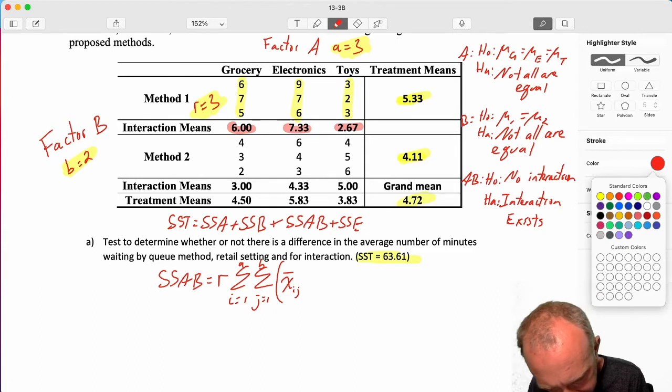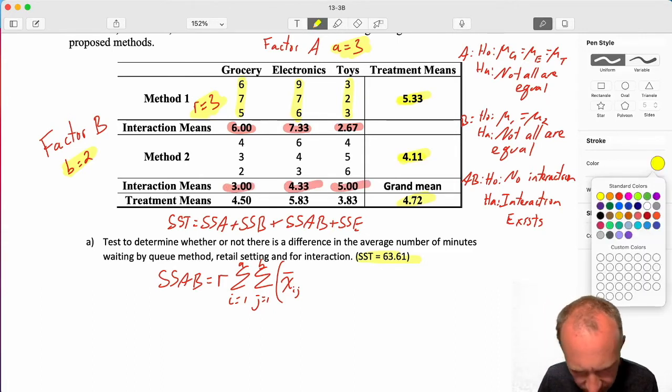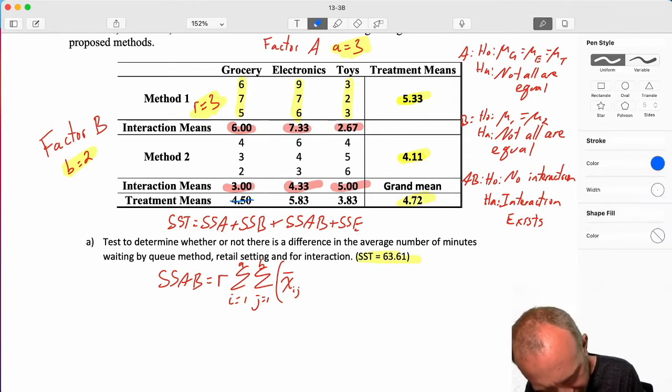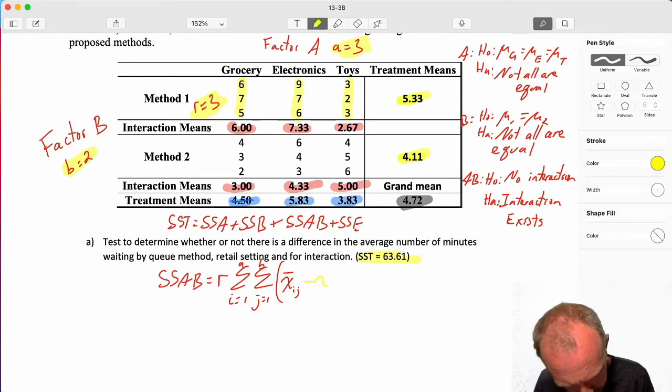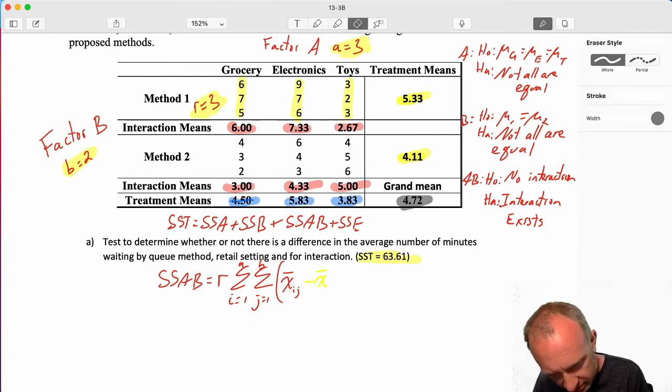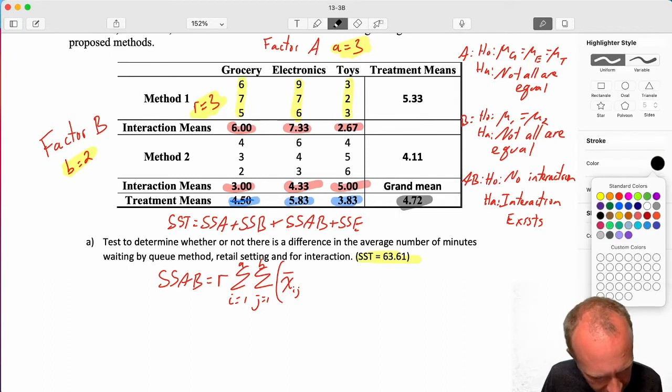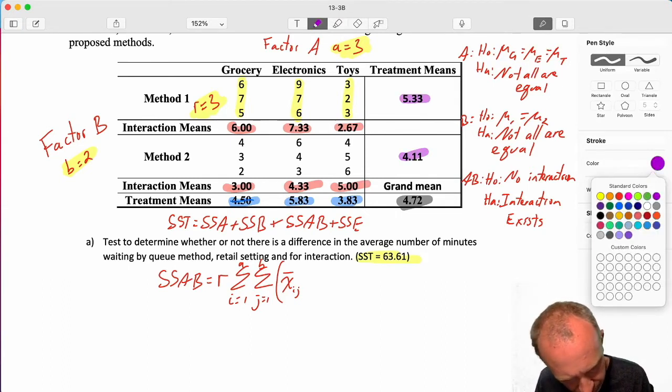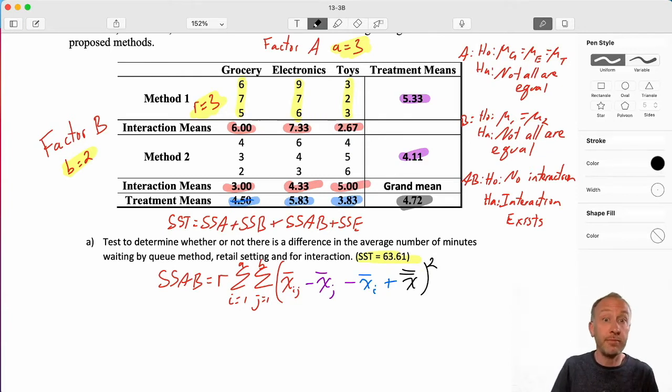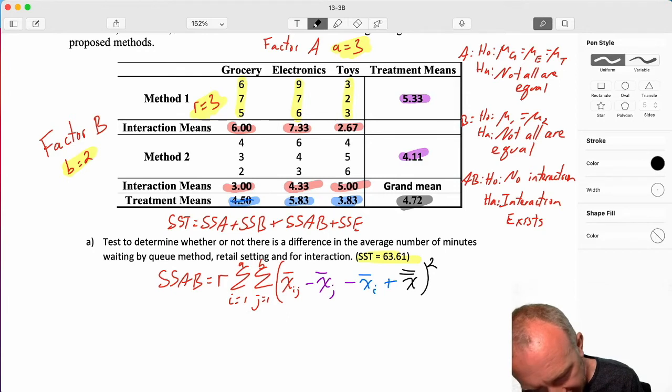6.7. Our degrees of freedom here, B minus 1. B is 2. Two treatments. So, I just have one degree of freedom. And so, there's my mean squared. Good. Now, interaction. This is the tedious one. I'm going to clean up some space here. SSAB. This is R. We have these double summations in here. We have the interaction means minus the treatment means. Why don't I color code this again for you? I know it's a little bit tedious, but maybe it's helpful. So, let's have interaction means will be the red. Here, we've already got treatment means yellow. And so, let's have these treatment means be blue.